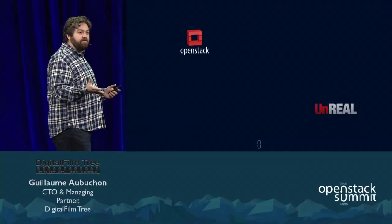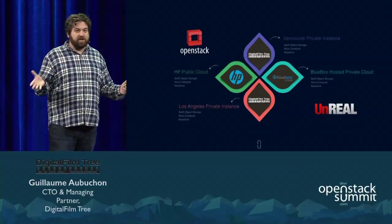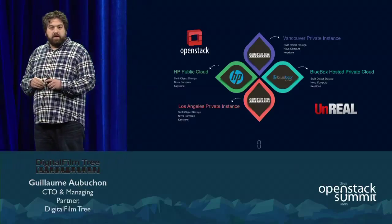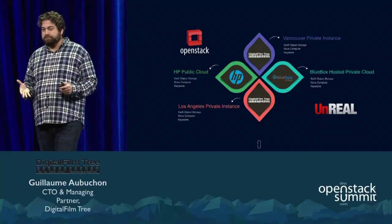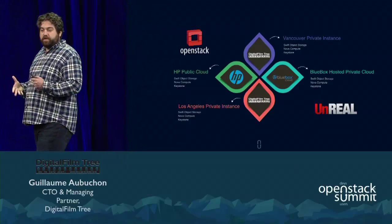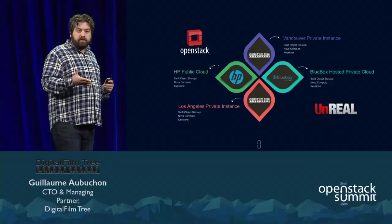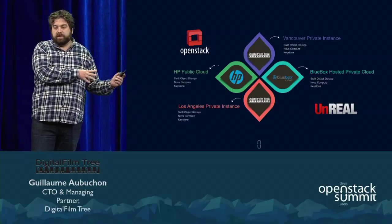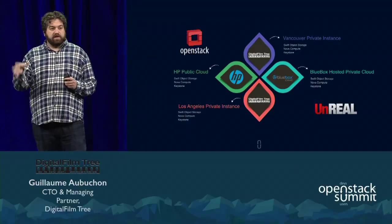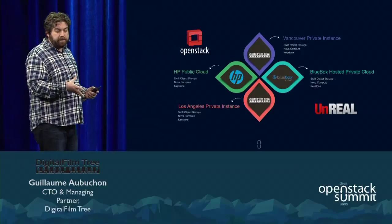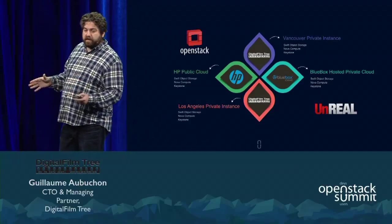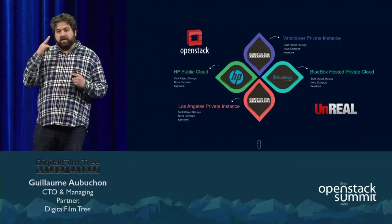At the same time Unreal was getting started, we were contacted about a proof of concept that OpenStack wanted to do around federated identity with two providers — HP and Blue Box. What this proof of concept allowed on Unreal was for us to run our private instances of OpenStack, running our open application in Vancouver and Los Angeles, and then instantly scale those workloads out to public cloud with HP, and out to hosted private cloud with Blue Box. So instant, on-demand scalability with two little files.